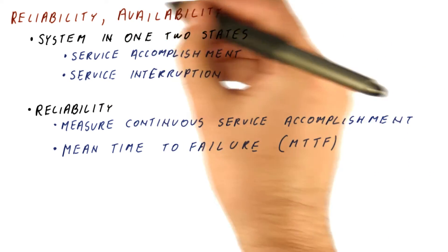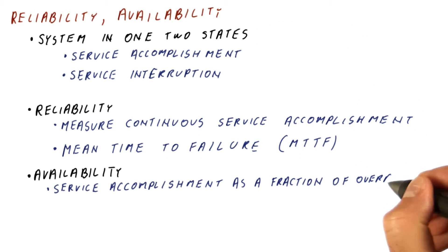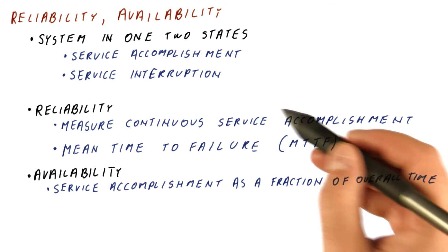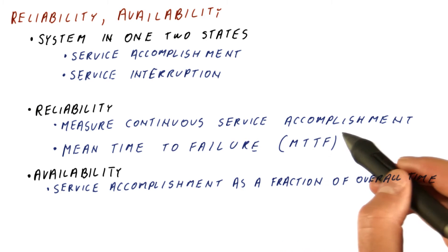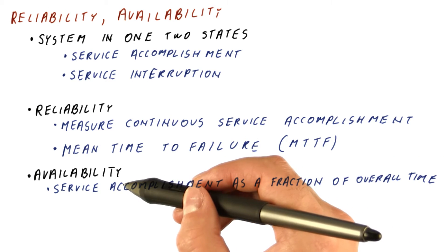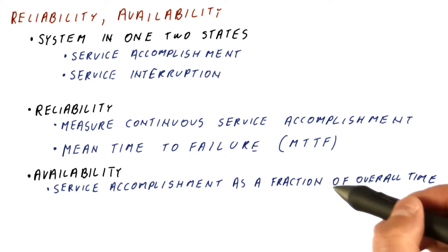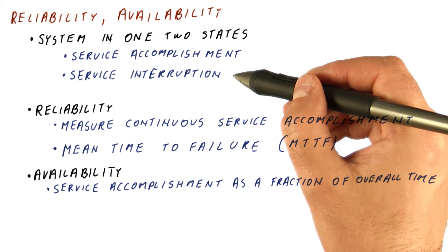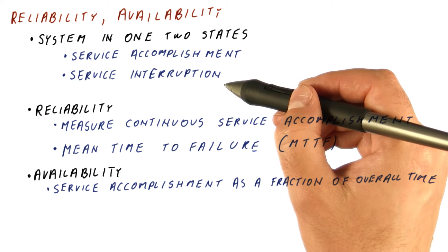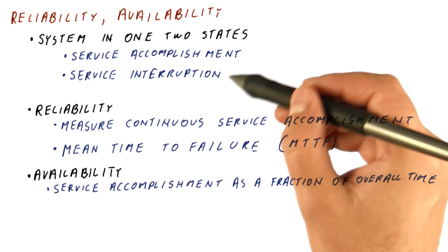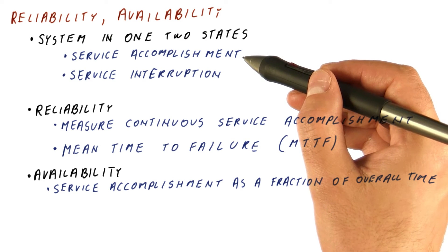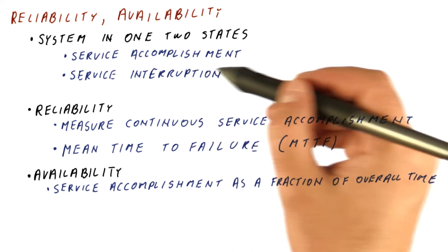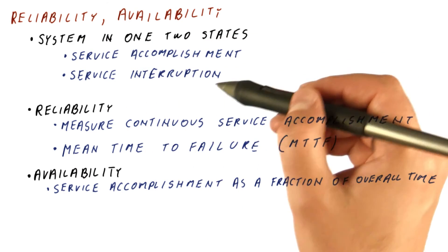Another popular metric related to this is availability. Availability measures service accomplishment as a fraction of overall time. So reliability measures how long do we get service accomplishment until the next failure, while availability measures what percentage of time we were in the service accomplishment state. If the system, on average, was half in the accomplishment state and half in the interruption state, then availability will be 50%. But reliability will be, on average, how long each of these accomplishment states lasted until we saw the interruption.